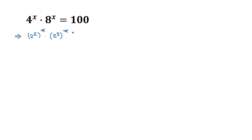So the equation becomes 2 squared to the power x, times 2 to the power 3 to the power x, equals 100. This gives us 2 to the power 2x times 2 to the power 3x equals 100.